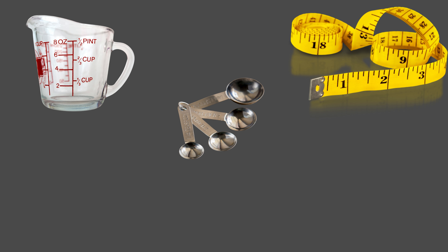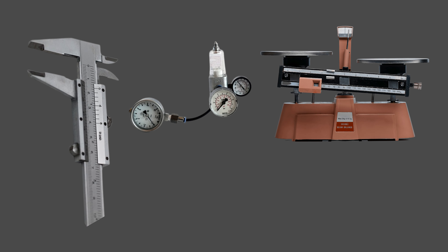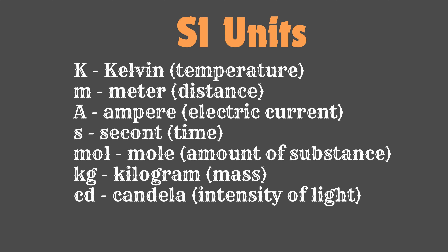Units of Measurement. In this course, you'll encounter various units of measurement, essential for quantifying observations in chemistry. The International System of Units, SI, is the standard, including units like meters for length, kilograms for mass, seconds for time, and moles for the amount of substance. Understanding these units and their conversions is crucial for accurate measurements and calculations.